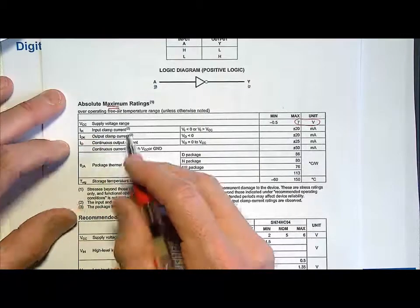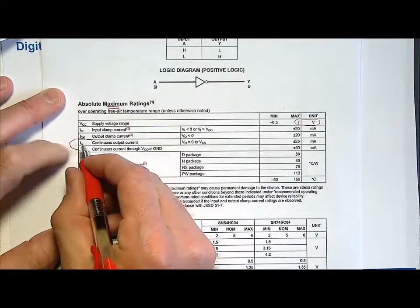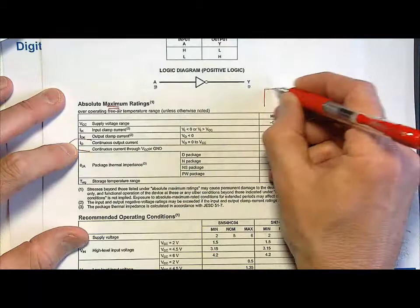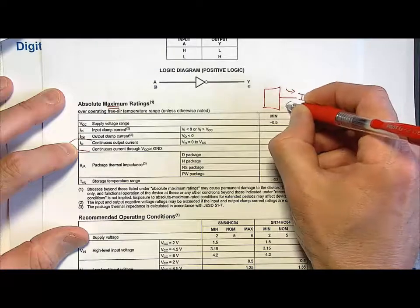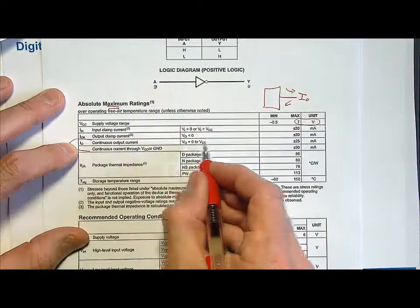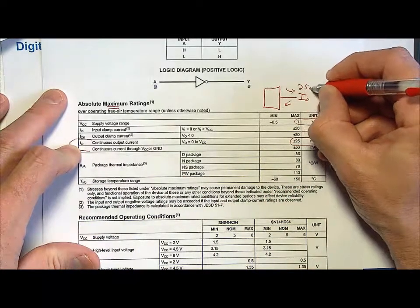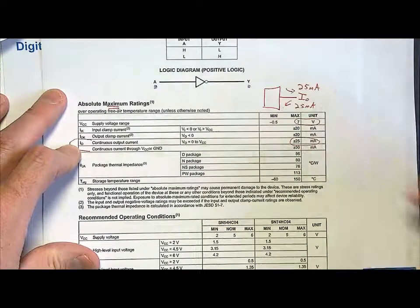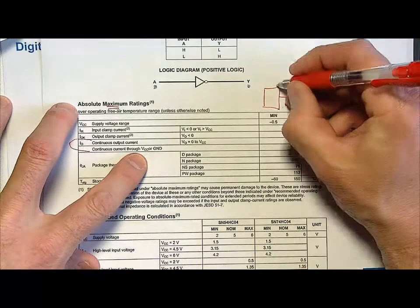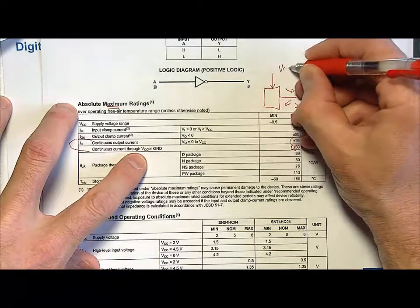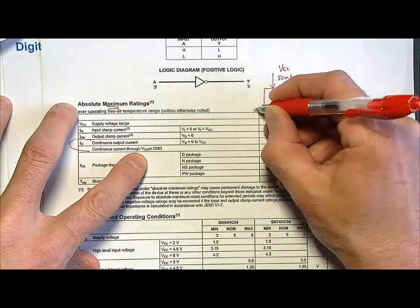There are specifications on input clamp currents and output clamp currents. What we're really interested in is the continuous output current — IO — which is the output. We've been drawing it like this on a transmitter. For continuous output current, it's plus or minus 25 milliamps. So on any given pin, it can source 25 milliamps and it can sink 25 milliamps.